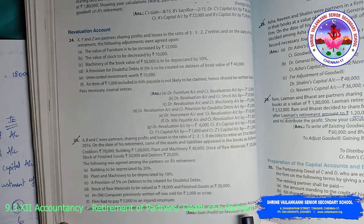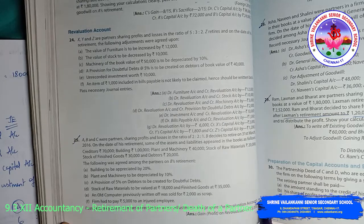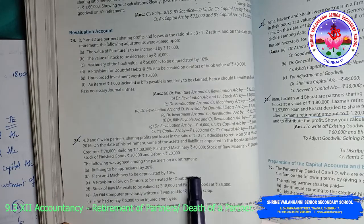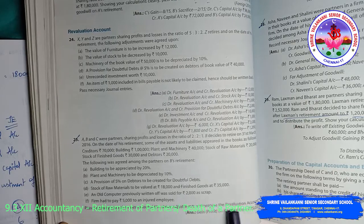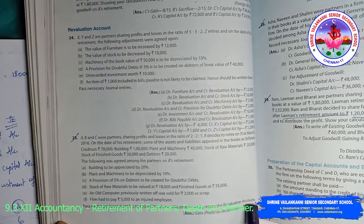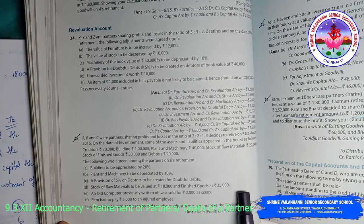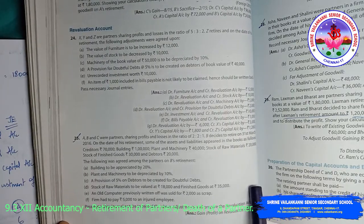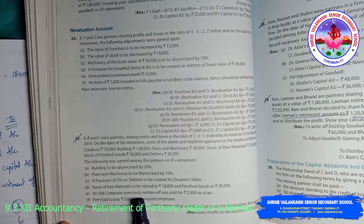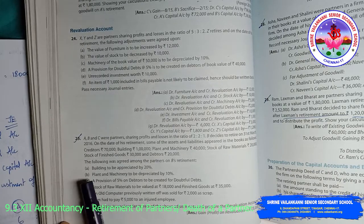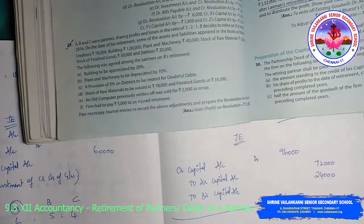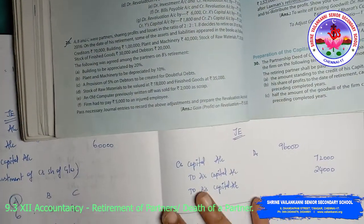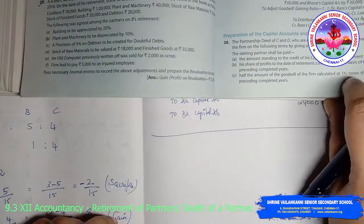When preparing the revaluation account: if asset increases or liability decreases, credit it; if asset decreases or liability increases, debit it. First let us prepare the revaluation account and then we will write the journal entry.